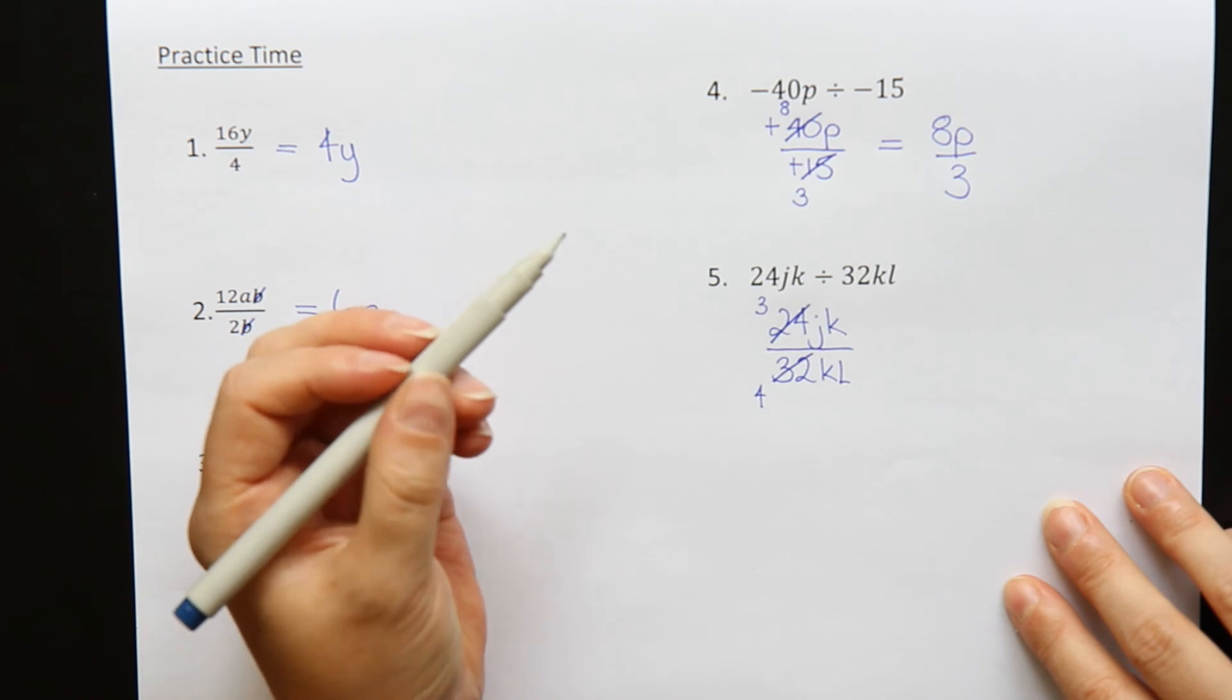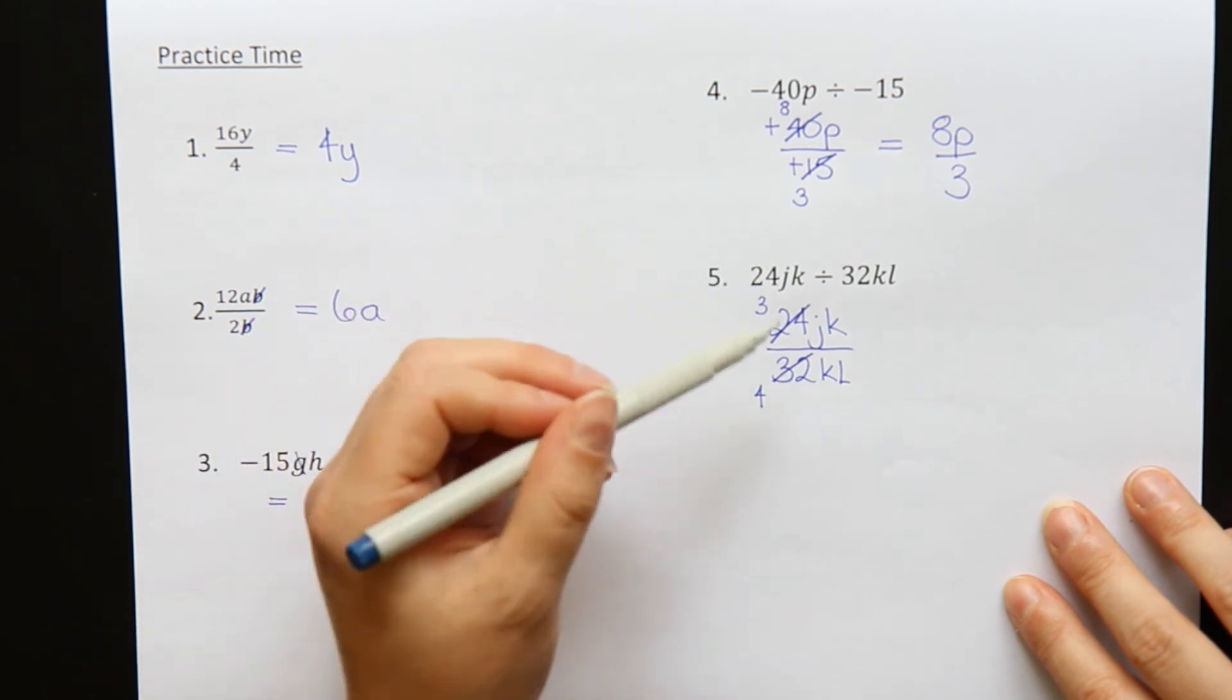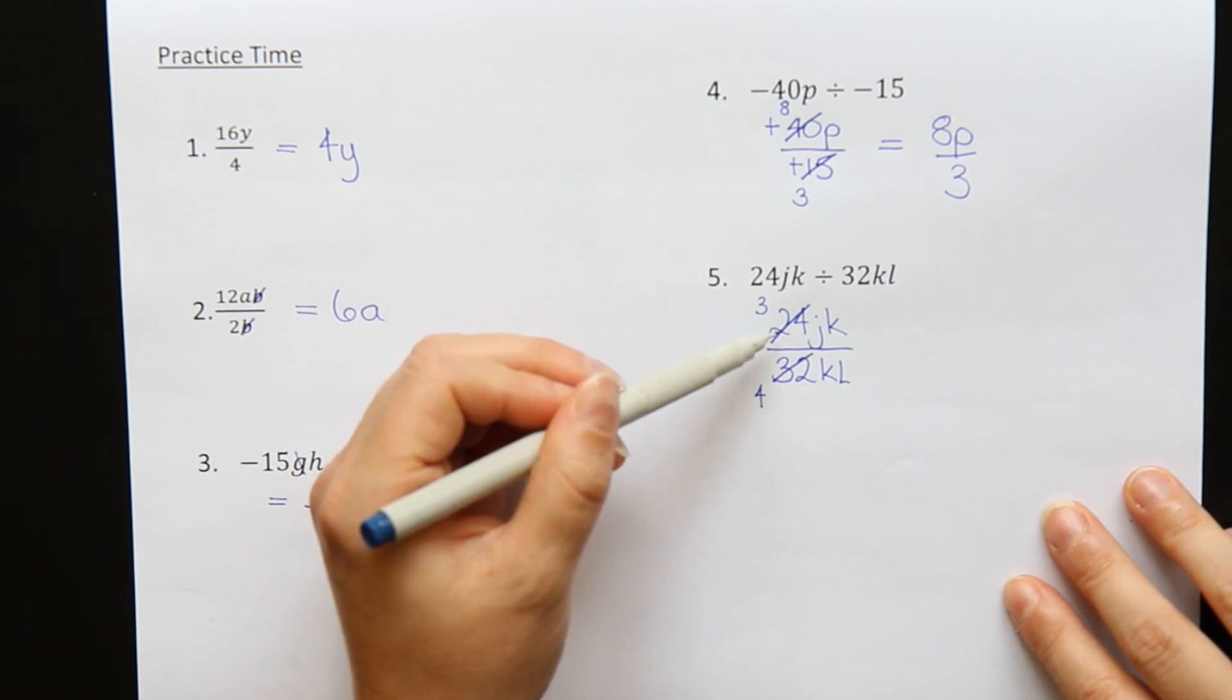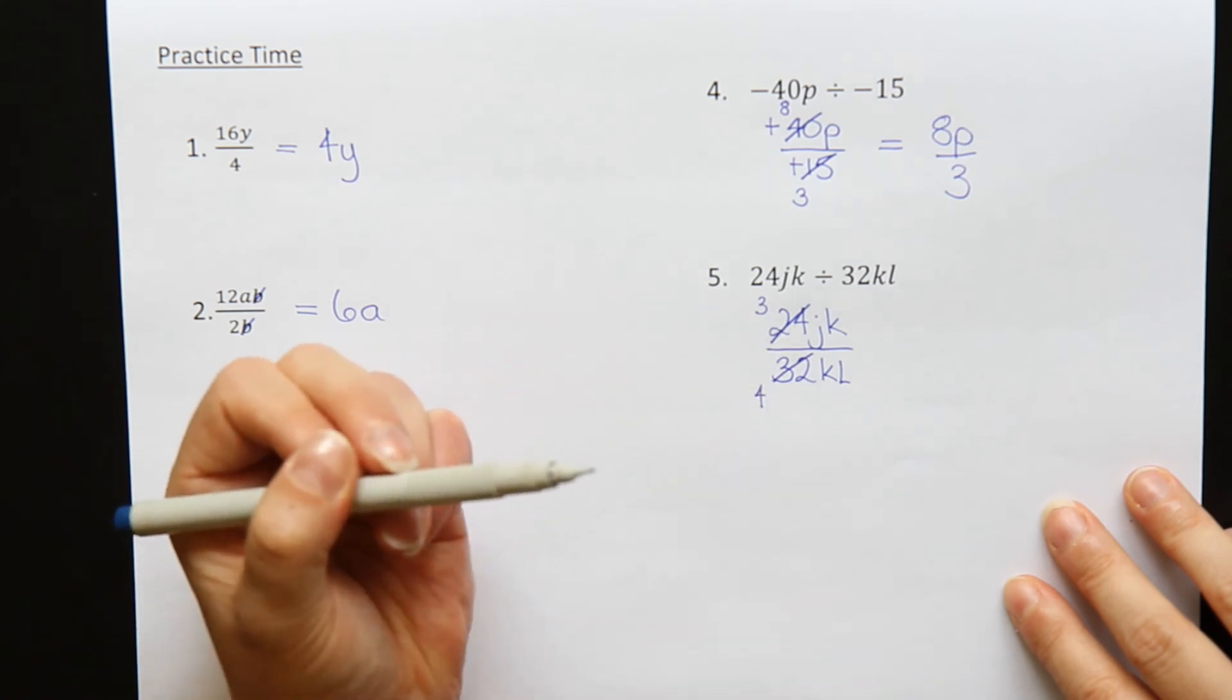32 divided by 8 goes 4 times. Just as a little trick here. If you're not that great at simplifying numbers, you can type in the fraction 24 over 32 in your calculator. And it will simplify it for you.